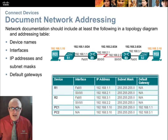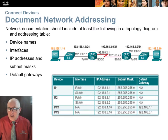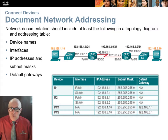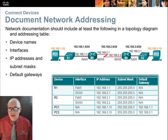In this diagram, the PCs have NA for the interface because there's only one interface. But many modern PCs — especially laptops — may have two or three different interfaces: one for a cellular network, one for Wi-Fi, and one for a wired network. On servers, it's very common to have two or even four wired interfaces. In that case, you would need to specify which IP is on which interface.